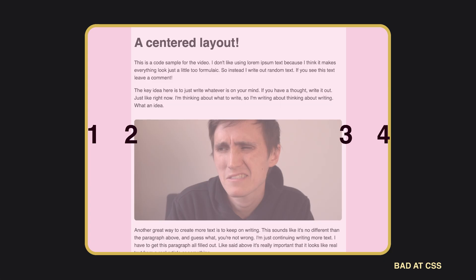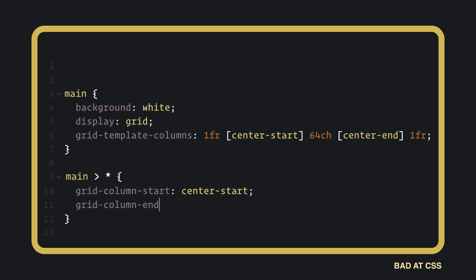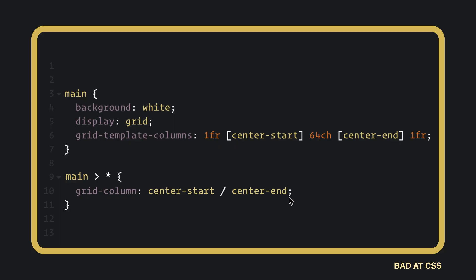To the left and right of each column is an invisible line called a track. By default, they are identified with chronological numbers, but you can give each track a custom name. Then to set the content in the middle, we can create a rule that will place any element in the middle column by default. The grid-column property is shorthand for both grid-column-start and grid-column-end. CSS Grid understands the dash-start and dash-end naming convention for track lines. We can reduce this code all the way down to just specifying the middle column.